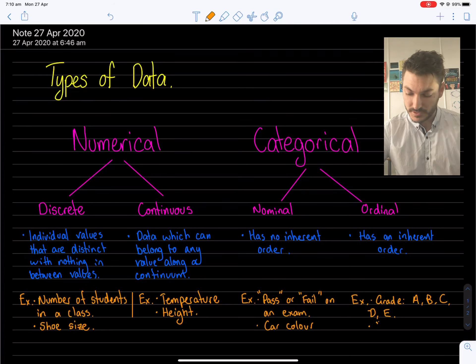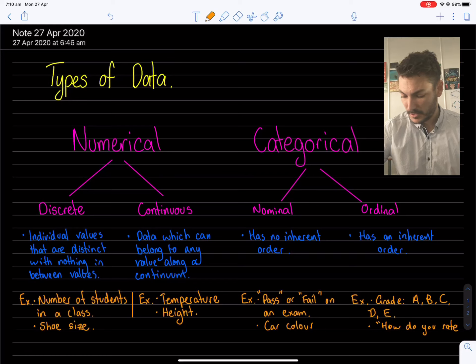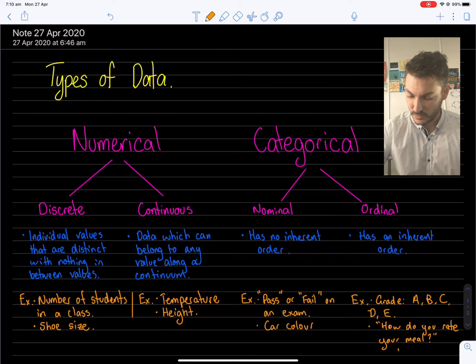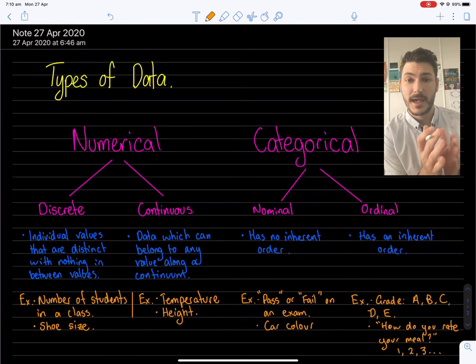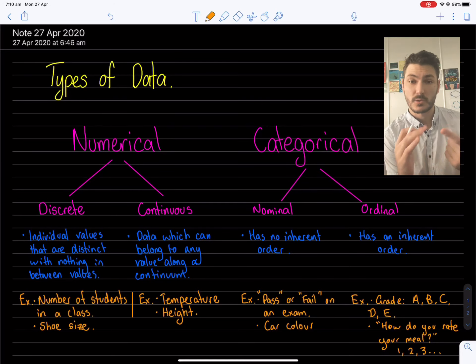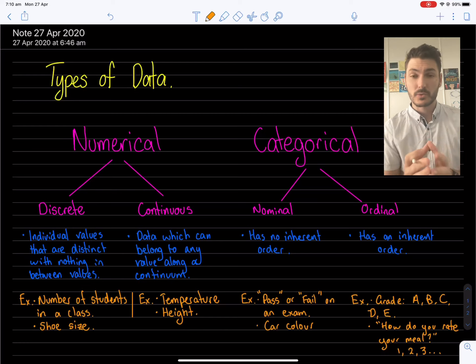Maybe if the question was, how do you rate your meal? If that was the question, and the answers were one, two, three, and they were out of quality. So one being low, five being really good. That's an order to that data. And that's ordinal data.